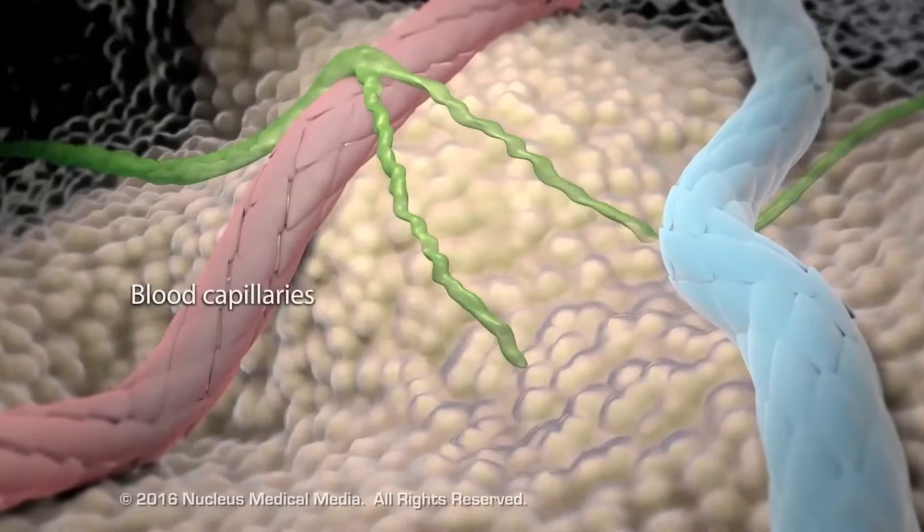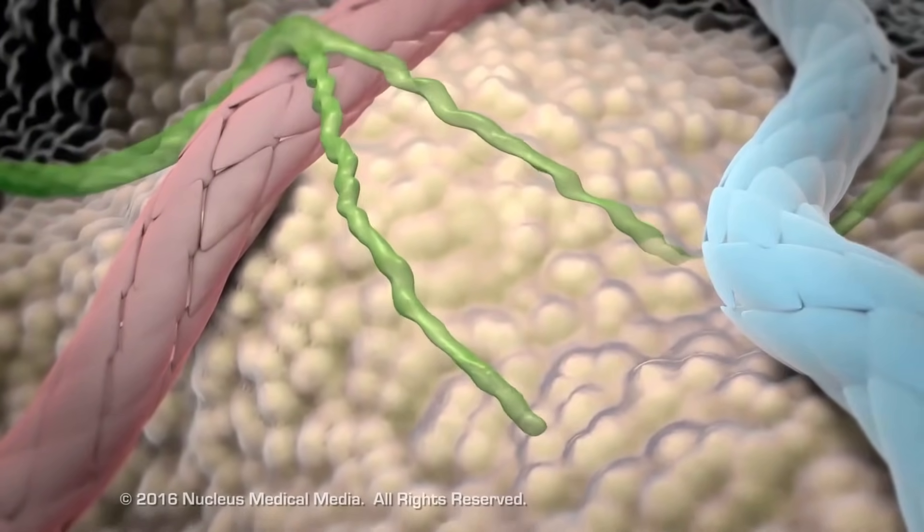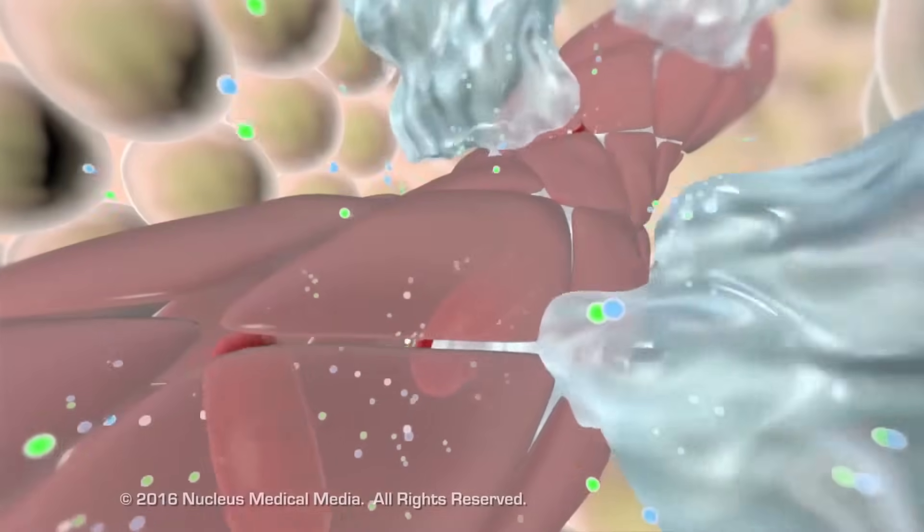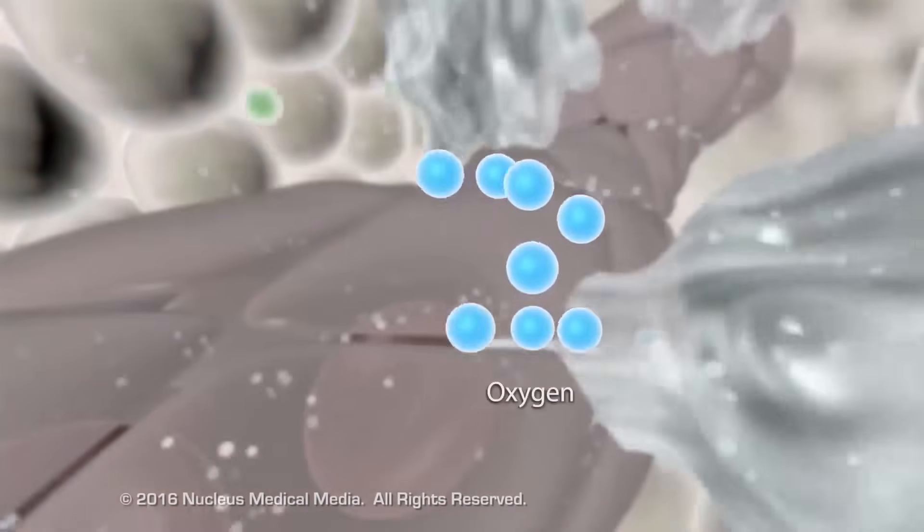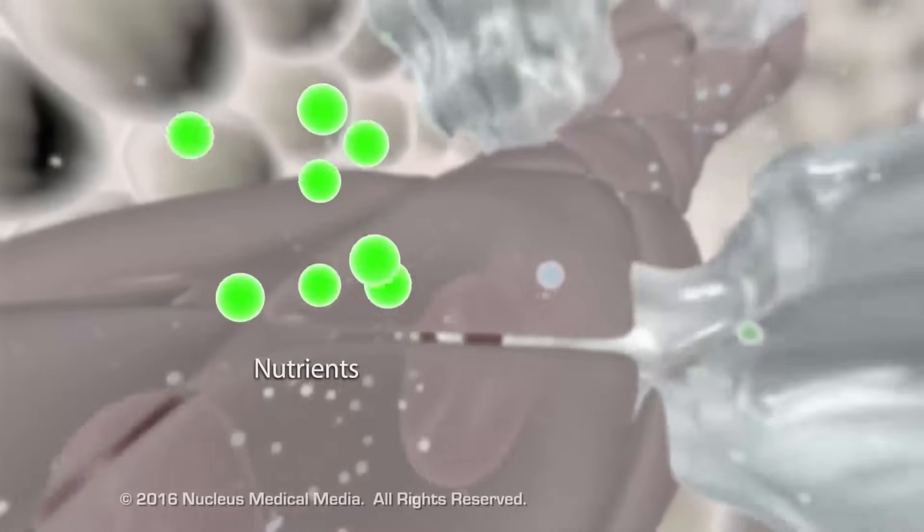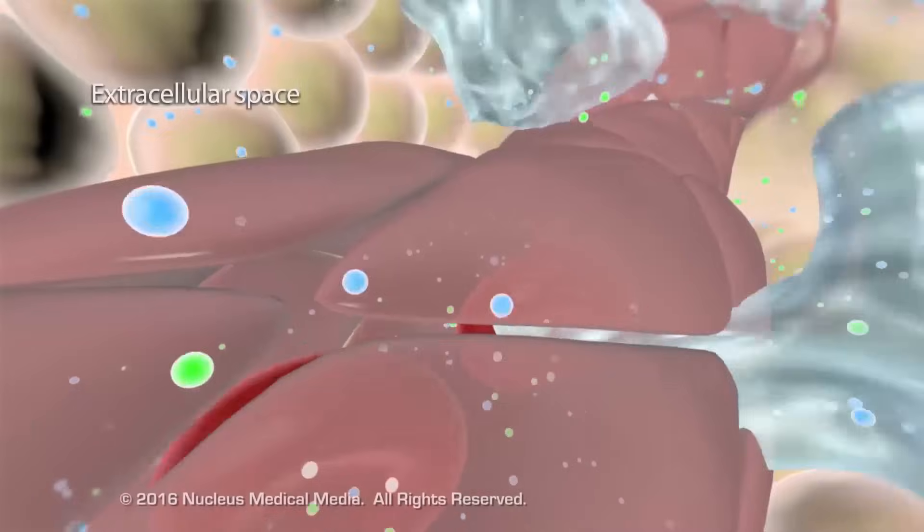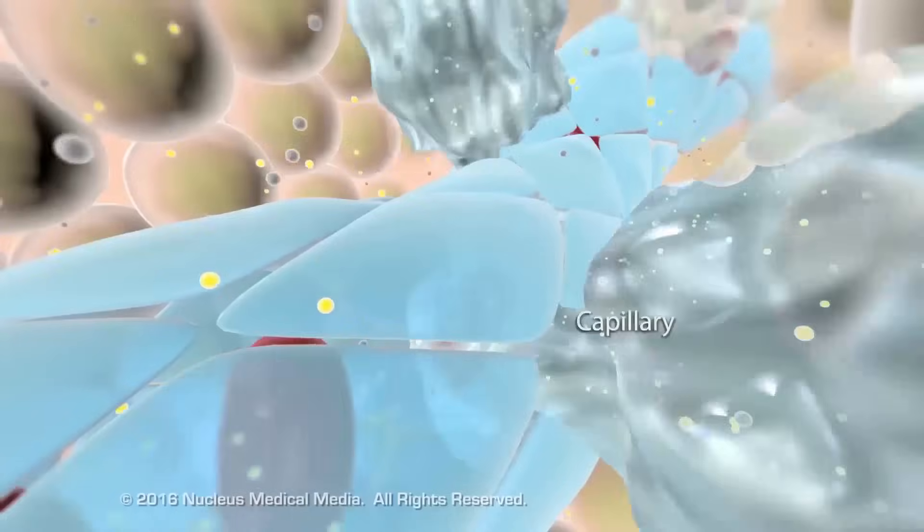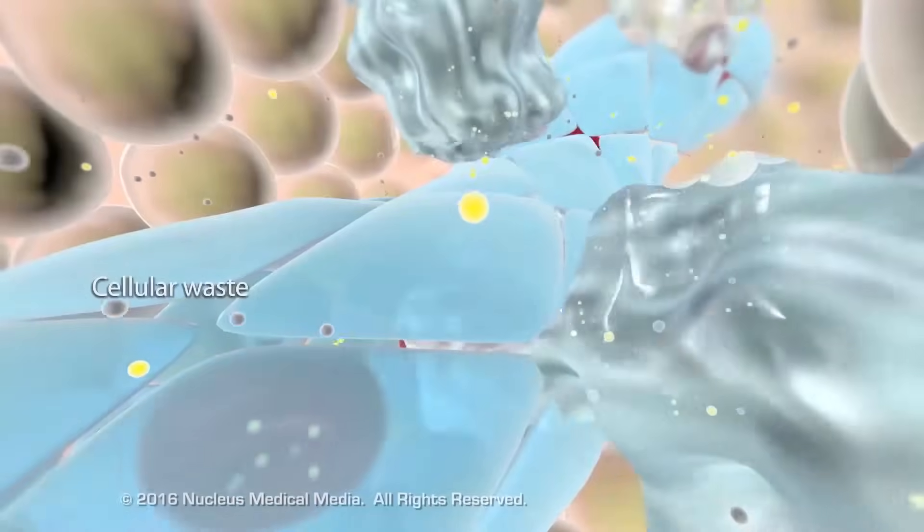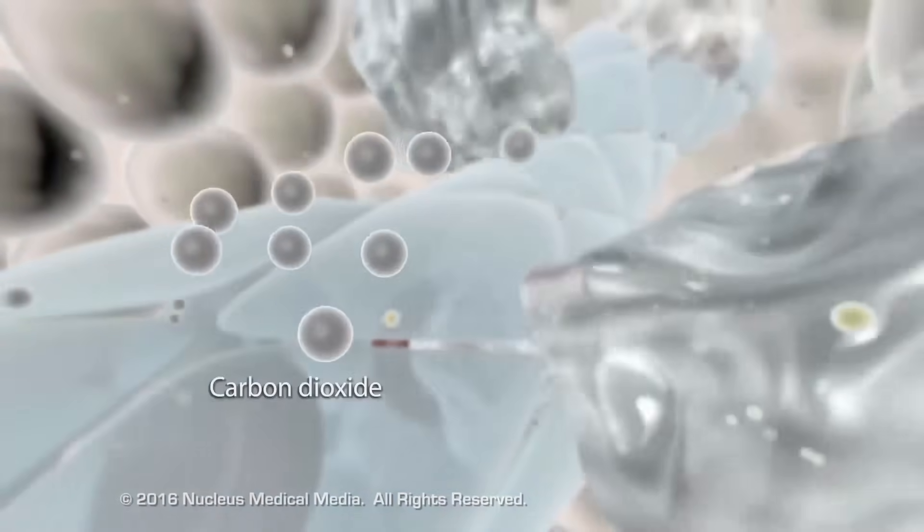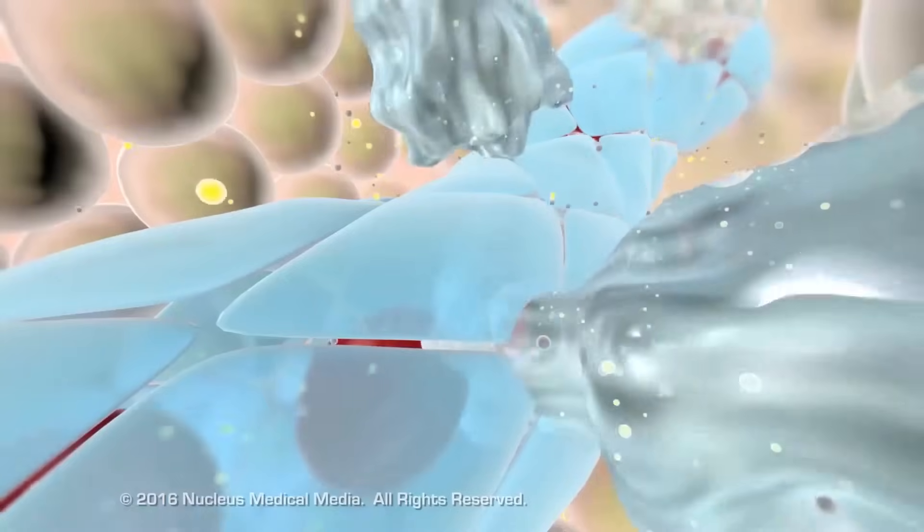Blood capillaries filter fluid from plasma into the tissues. The fluid, in combination with water, oxygen, and nutrients, comprises interstitial fluid in the extracellular space. Capillaries reabsorb most of the water and cellular wastes, like carbon dioxide and urea, into the venous bloodstream.